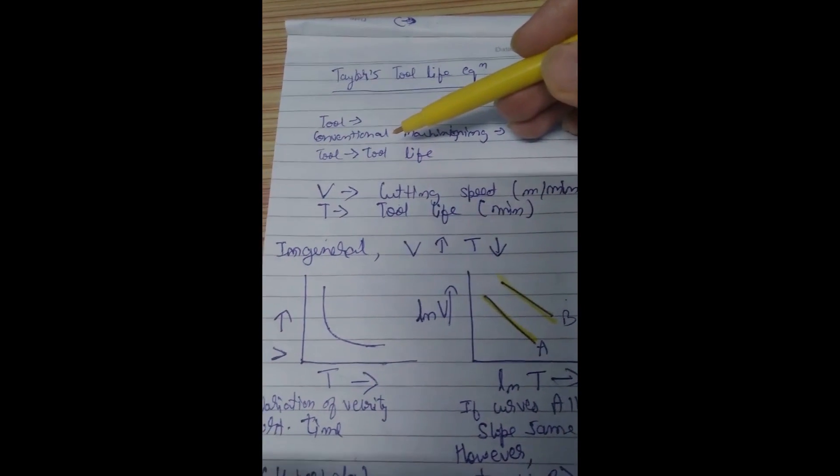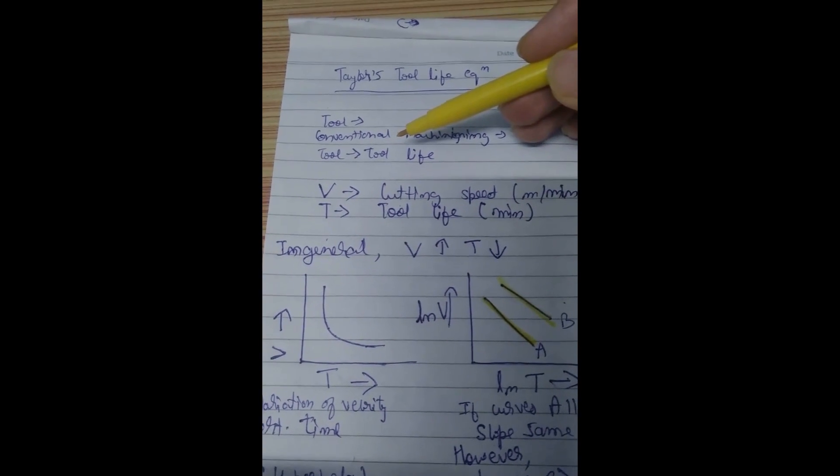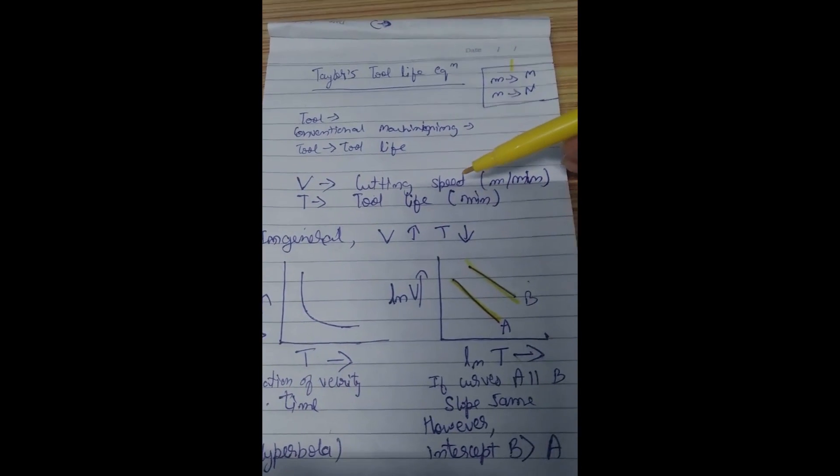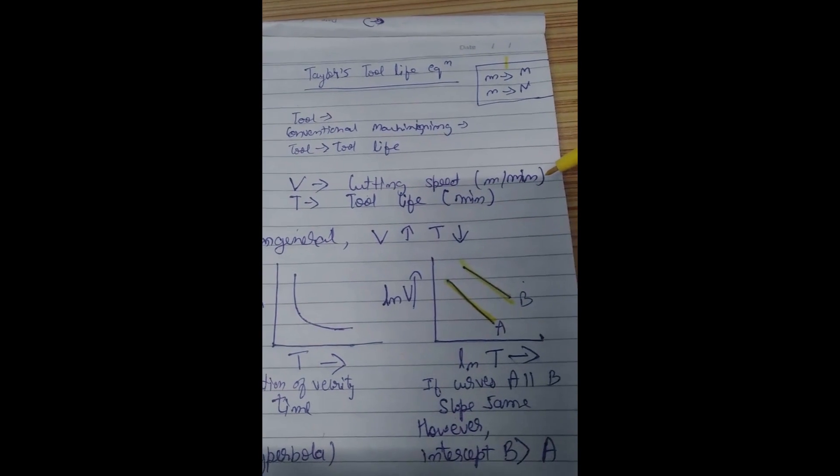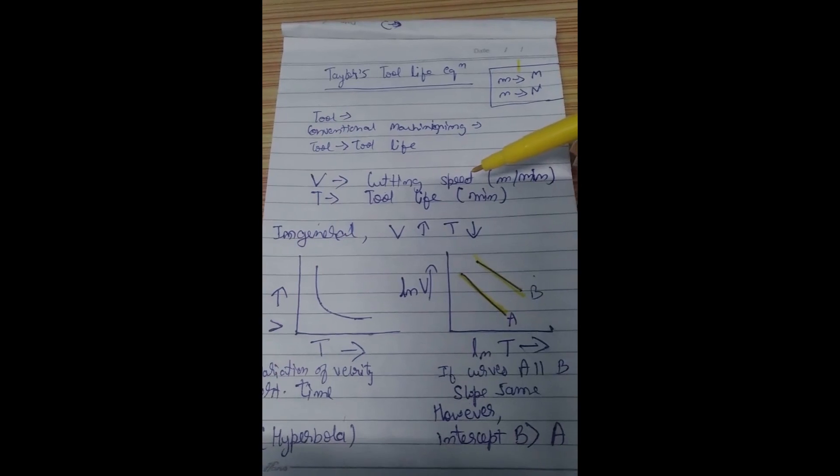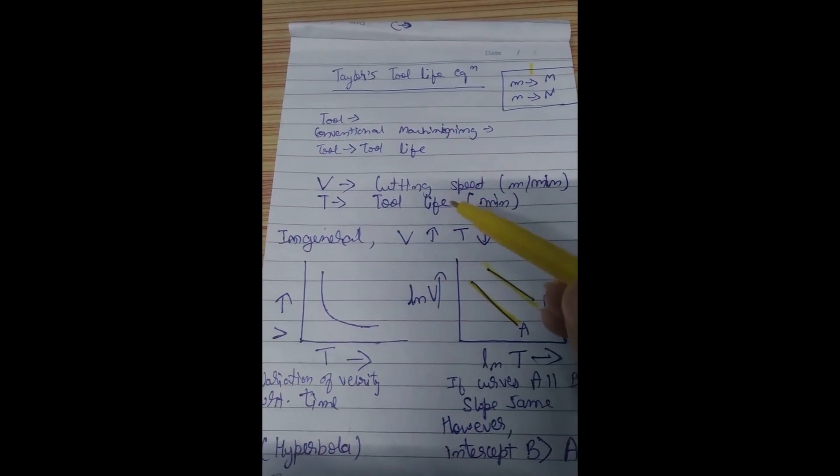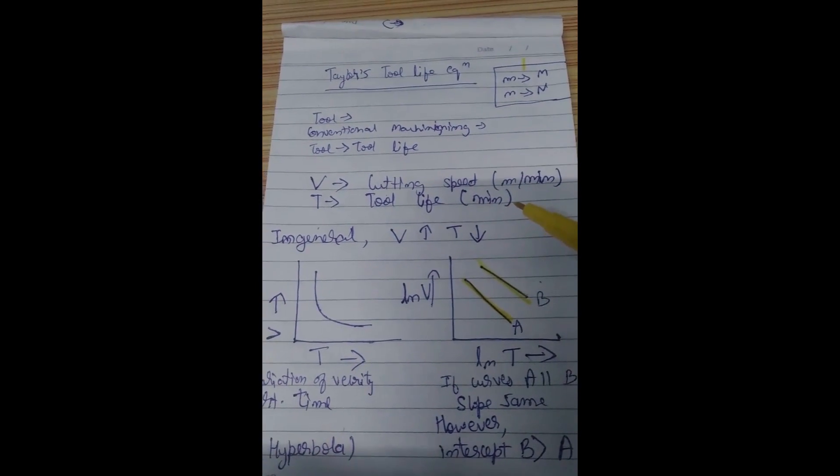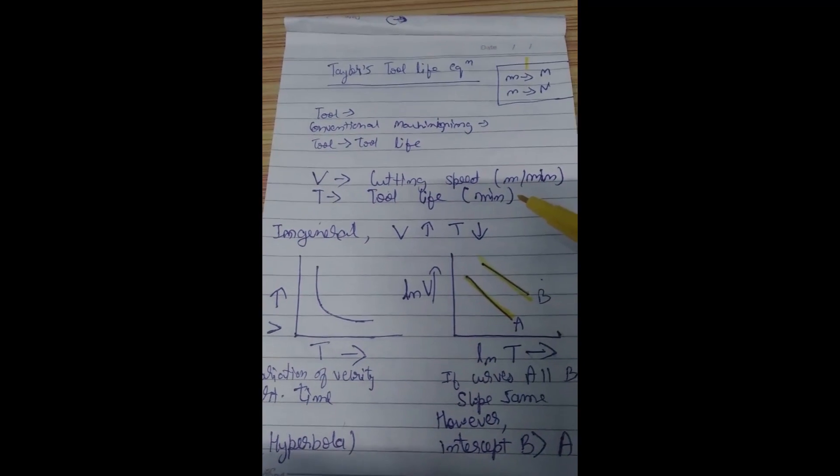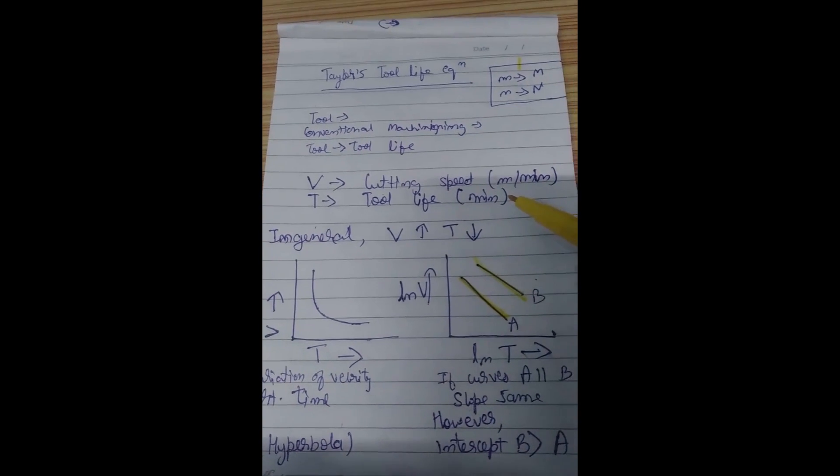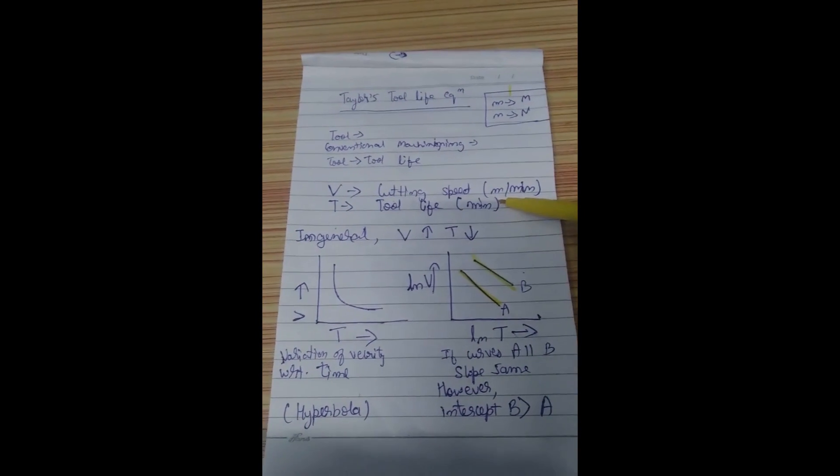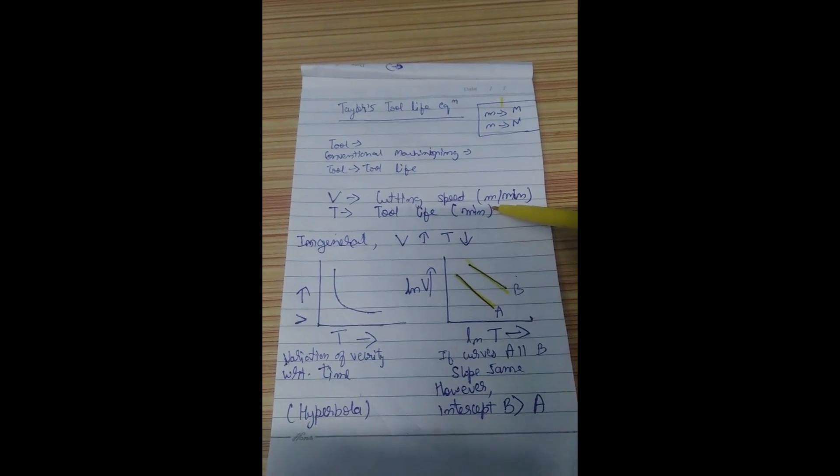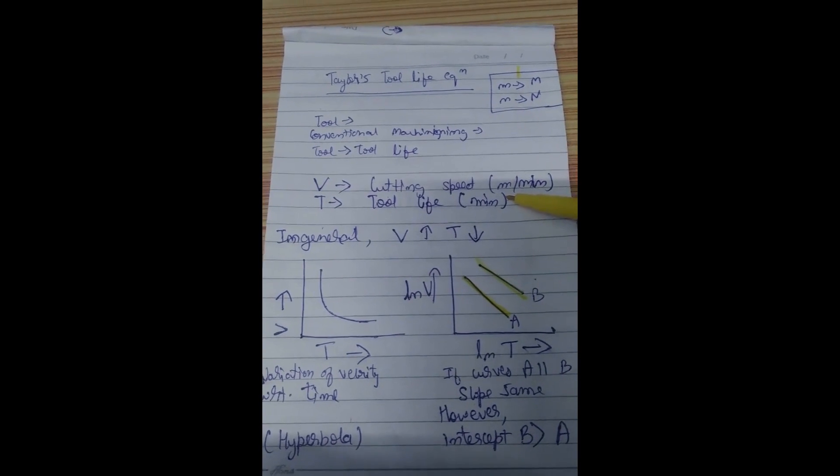In conventional machining we are having a tool which will have a particular cutting speed in meter per minute, and for that cutting speed it will have a tool life in minutes. Tool life we basically define as the time up to which the tool will perform satisfactorily, or more technically speaking it is the time up to which the crater wear reaches 0.3 mm or the flank wear reaches 0.3 mm.